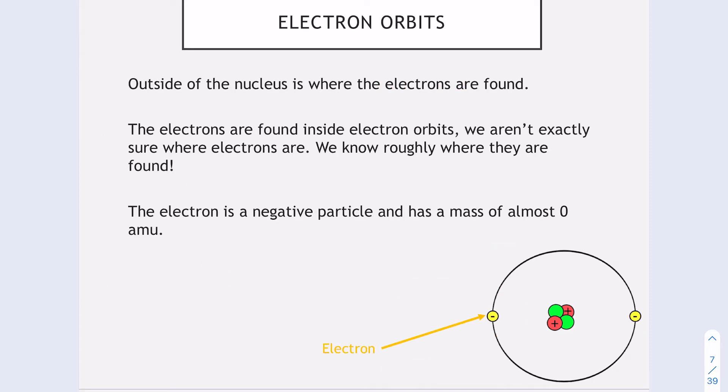Outside of the nucleus are the electrons, found inside electron orbits. We're not entirely sure where they are, but we have a rough idea. Electrons are a negative particle and have a mass of almost zero.